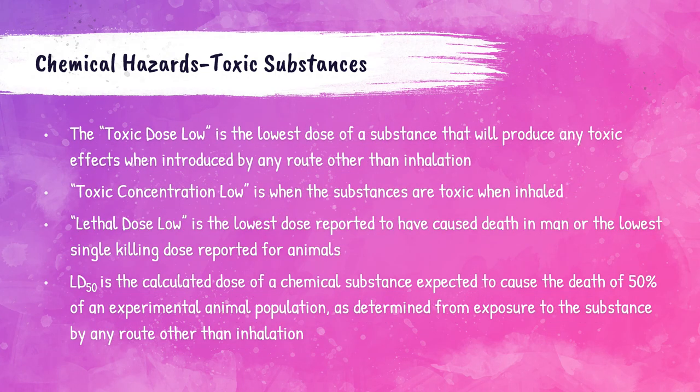There are multiple terms associated with describing toxic substances. Toxic Dose Low refers to the lowest dose of a substance that will produce any toxic effect in human beings when introduced by any route other than inhalation. For inhalation, the equivalent term is Toxic Concentration Low. Lethal Dose Low is the lowest dose reported to cause death in a human or the lowest dose causing death in animals. The LD50 is the calculated dose expected to cause death in 50% of an experimental animal population when exposed by any route other than inhalation.